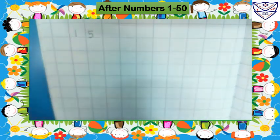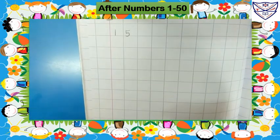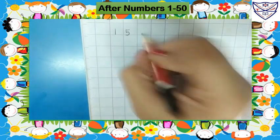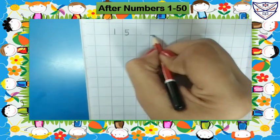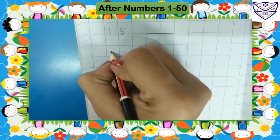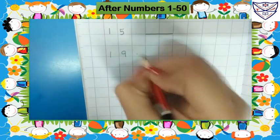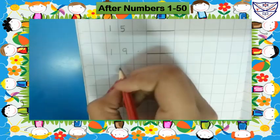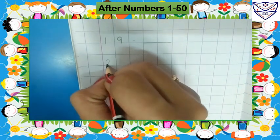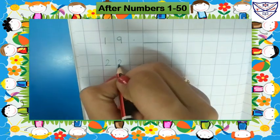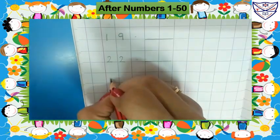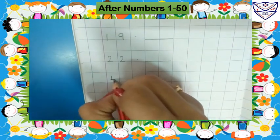Leave one box, put here small dash, leave one line, write here 19. Leave one box, put here small dash, leave one line, write here 22. Leave one box, put here small dash, leave one line, write here 44.